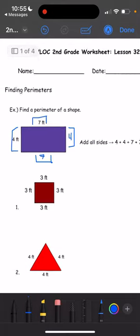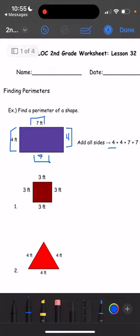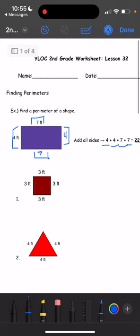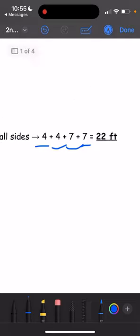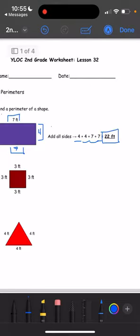So to find the entire perimeter, you're just going to add all the sides together. So 4 plus 4 plus 7 plus 7. We're going to add all 4 of these numbers together to get 22 feet as our perimeter.